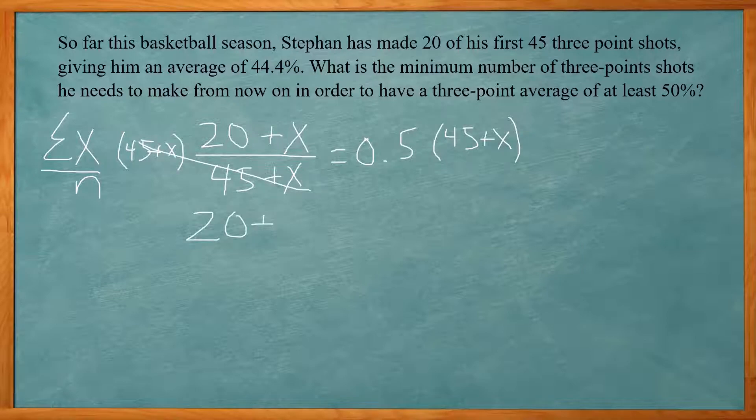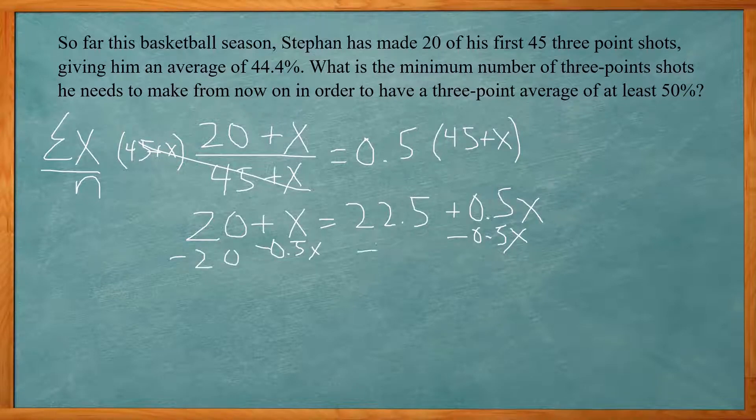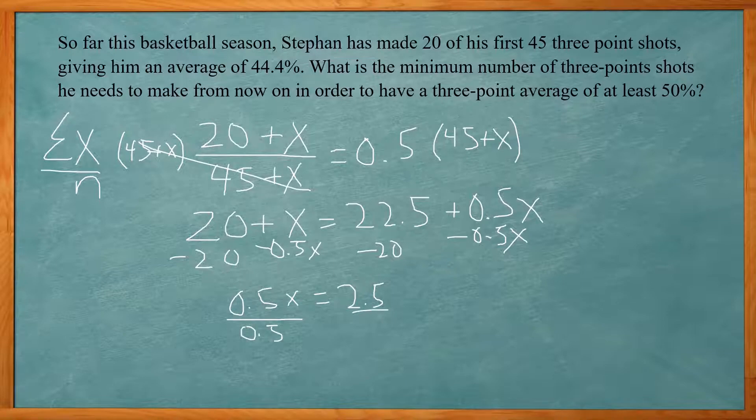Then give me 20 plus x. And then 0.5 times 45 is 22.5 and 0.5 times x is 0.5x. So I'm going to get the x's on the same side. So I'm going to subtract 0.5x from both sides and I'm going to subtract 20 from both sides. So 1x minus 0.5x gives you 0.5x and 22.5 minus 20 gives you 2.5. And then divide both sides by 0.5.